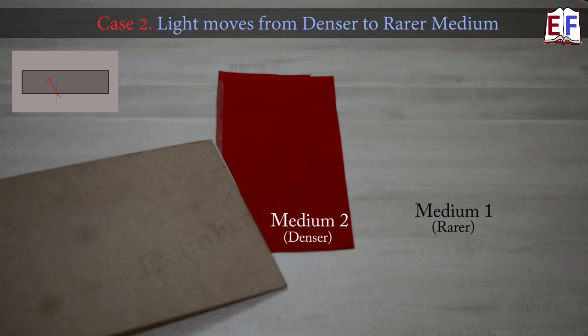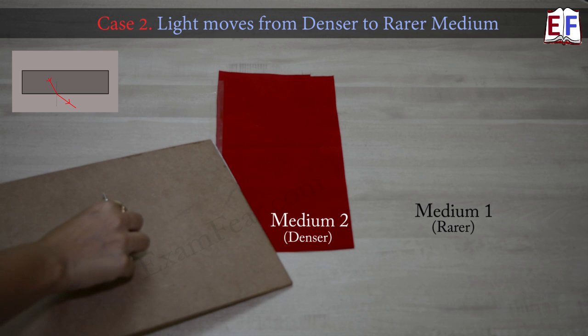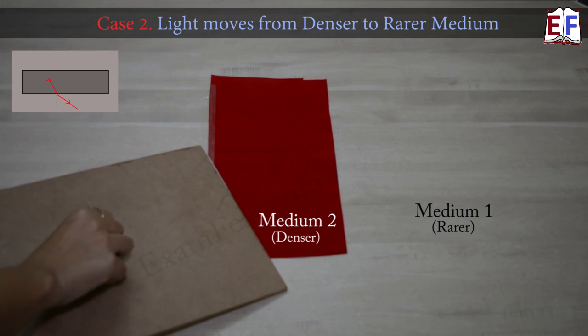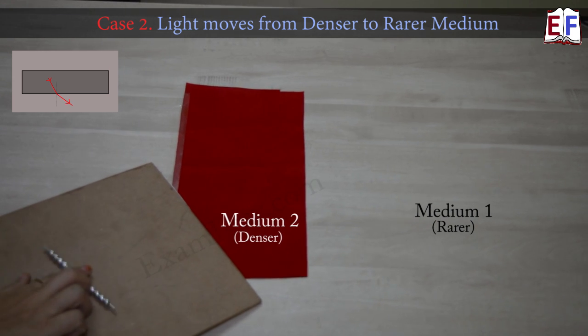We will again project this beam of light at an angle, but this time it will move from a denser medium to a rarer medium. So now it will move from the sheet of cloth to the table.